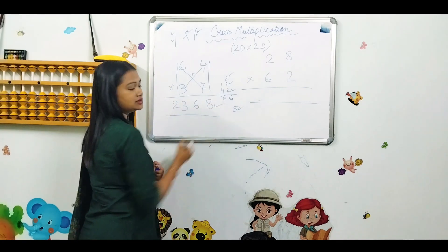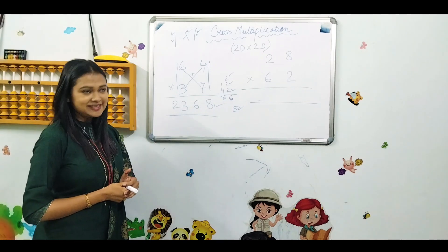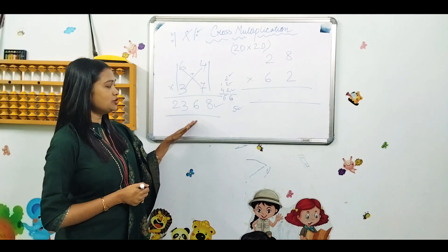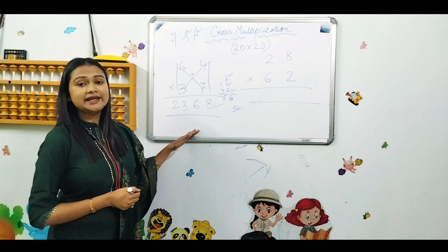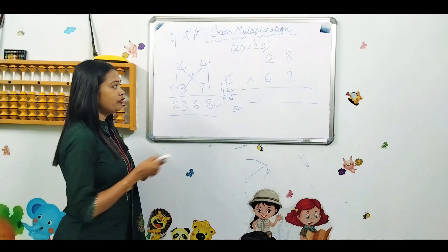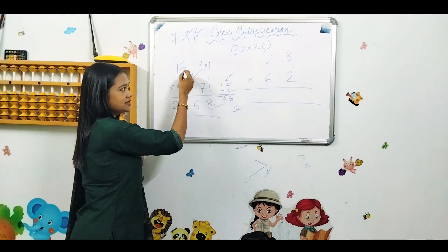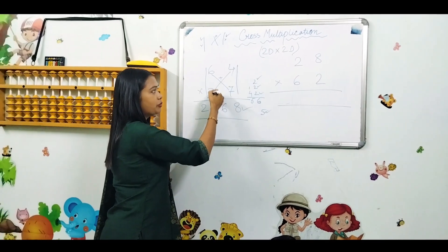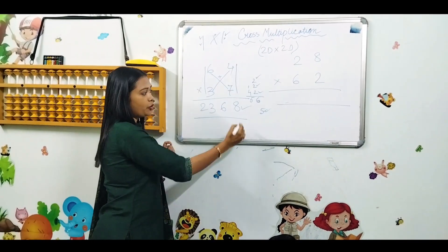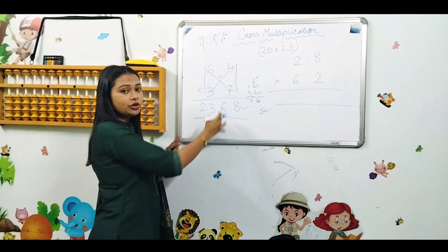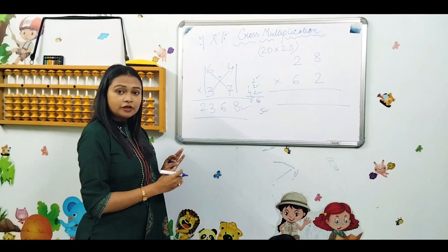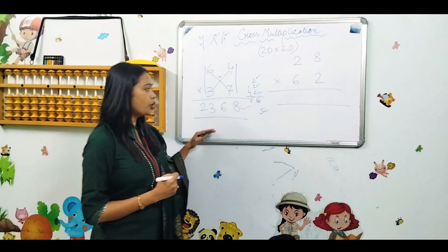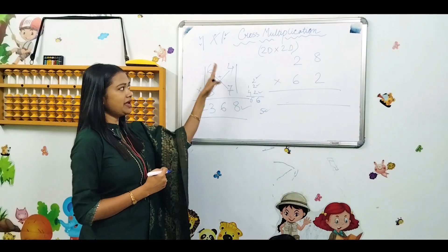And here is your answer. So normally when you do this, you follow three steps. First: 7×4, 7×6. Second step: 3×4. Second step: 3×6. Each other step is addition. So if you do three steps, you will need more than one step.